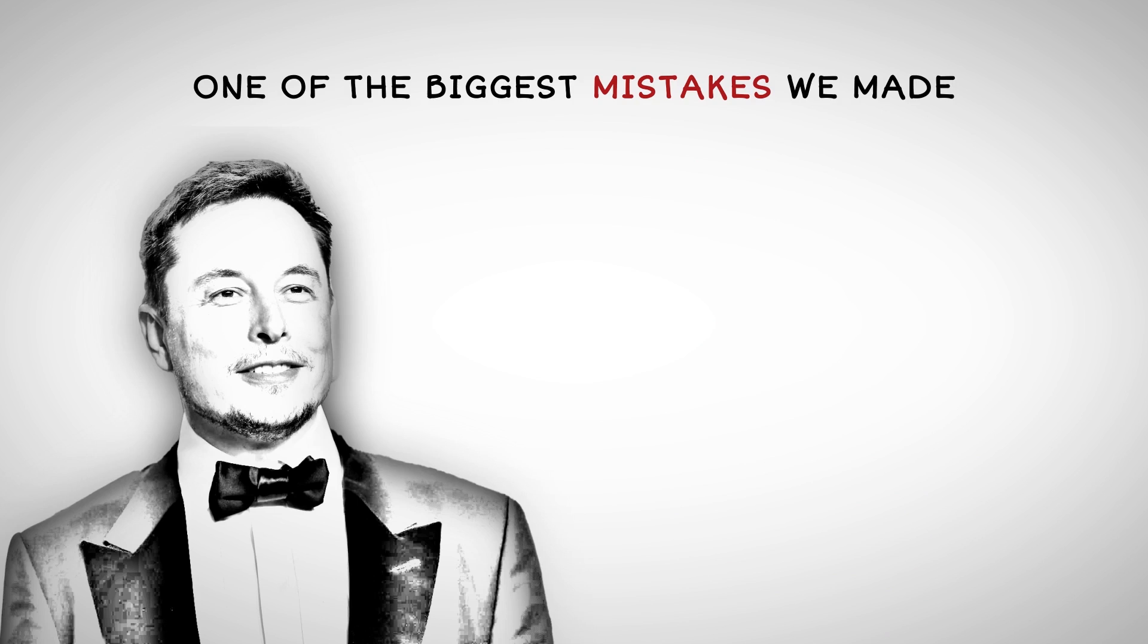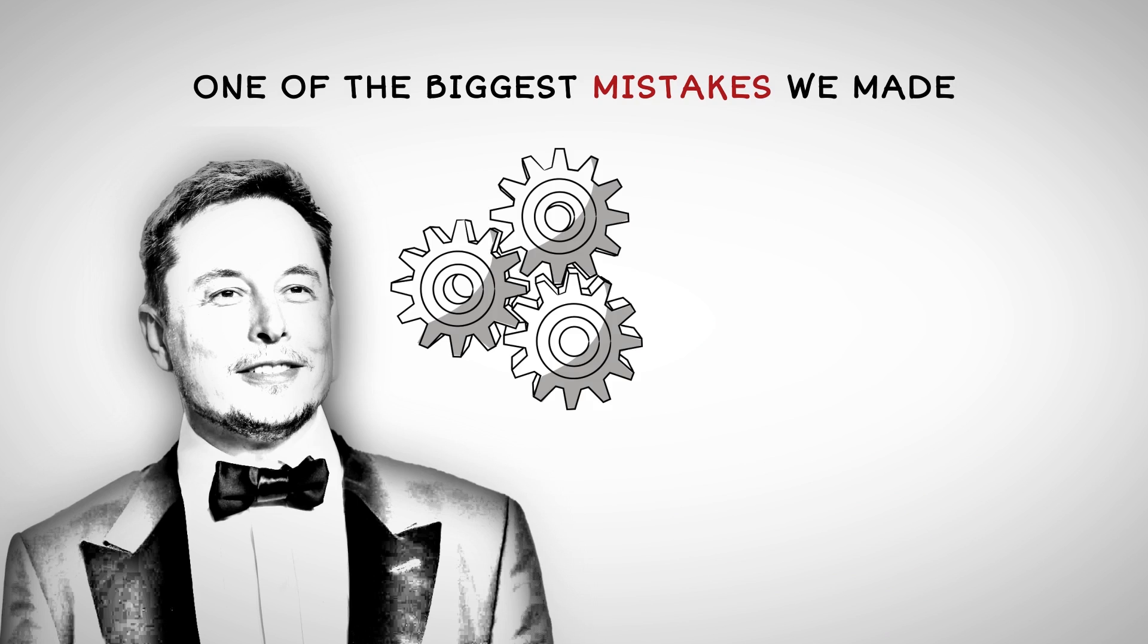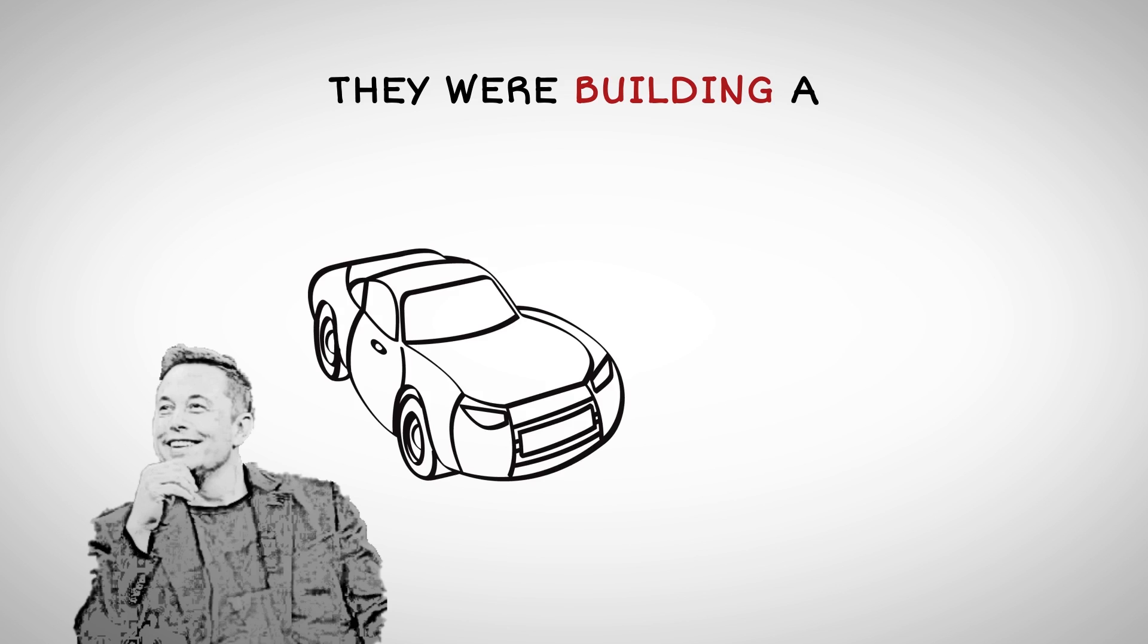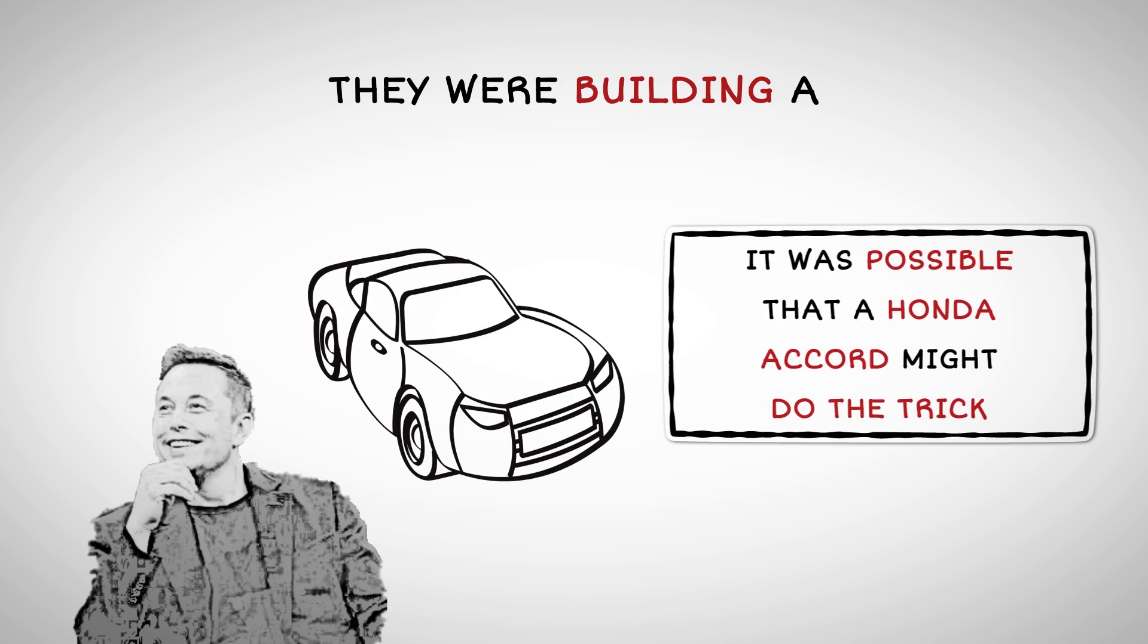One of the biggest mistakes we made was trying to automate things that were super easy for a person to do, but super hard for a robot to do. They were building a Ferrari for every launch, when it was possible that a Honda Accord might do the trick.